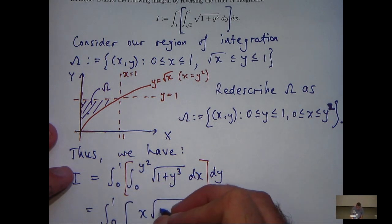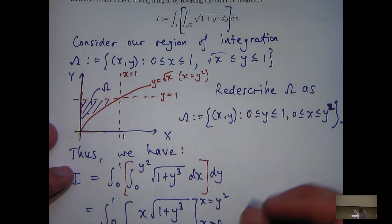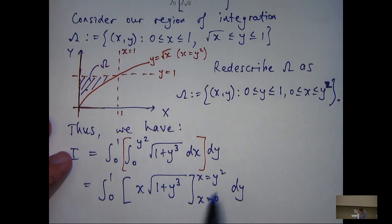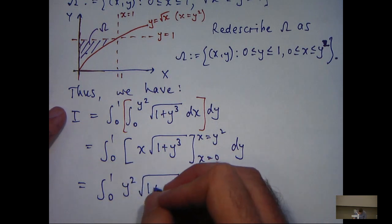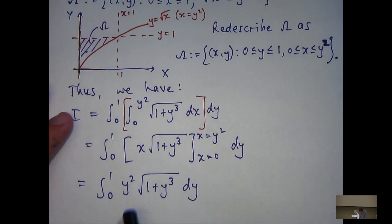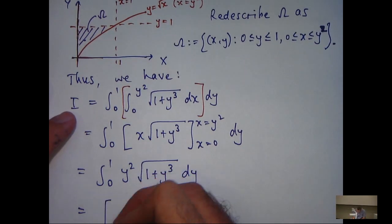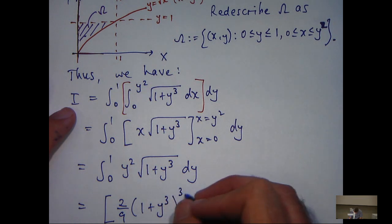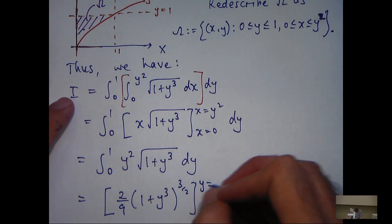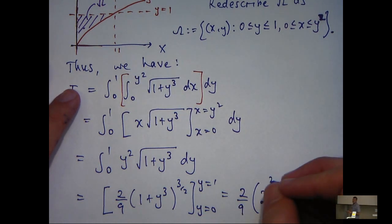After evaluating the inside integral with respect to x and substituting in the limits in the normal way, I get a single integral. I can evaluate this one of two ways: by inspection, or using the substitution u equals 1 plus y cubed. I'm going to do it by inspection, and substituting in the usual way, I come up with the final answer.